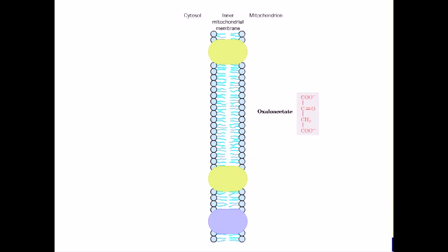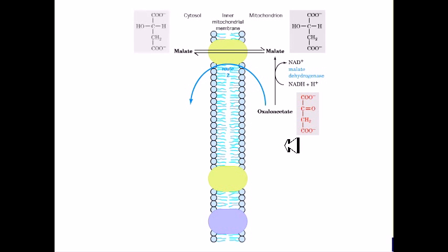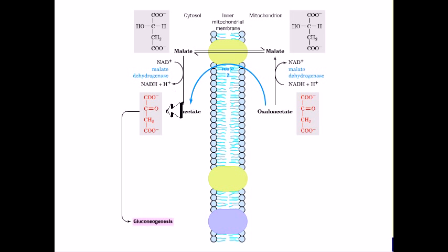In route 2, oxaloacetate is converted to malate by malate dehydrogenase in the mitochondrion. Malate is transported to the cytosol and converted back to oxaloacetate, where it enters the gluconeogenesis pathway.